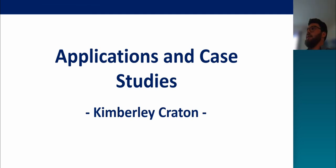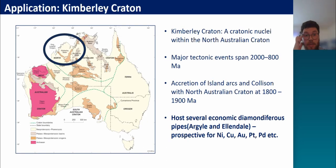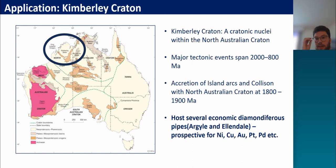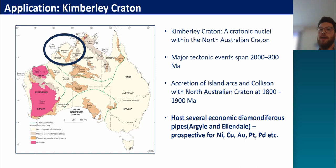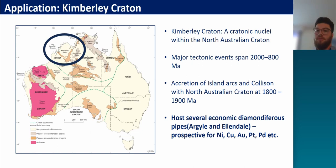For the second part of the talk, I'm going to be talking about the Kimberley Craton, using similar techniques to what we've done for the Gawler Craton. The Kimberley Craton is one of the main cratonic nuclei making up the North Australian Craton. It records a number of complex tectonic, metamorphic and magmatic events spanning most of the Proterozoic, with major events occurring between 1800 to 1900 million years ago when a series of island arcs were accreted onto its margins. The Kimberley Craton is probably most well known for the diamond-bearing deposits it contains, including Argyle and Ellendale, but is also prospective for nickel, cobalt, gold, platinum and palladium.